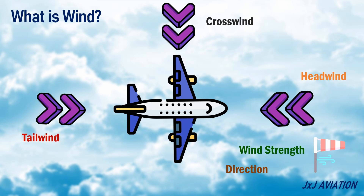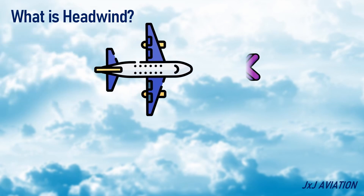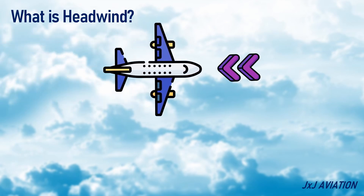These winds may or may not be beneficial to an aircraft. Let's see this in more detail. What is headwind? When the wind direction is opposite to the direction in which an aircraft is flying, then it is called headwind.